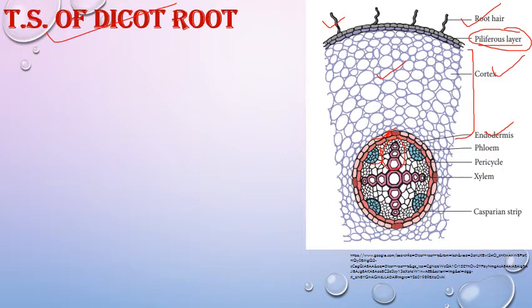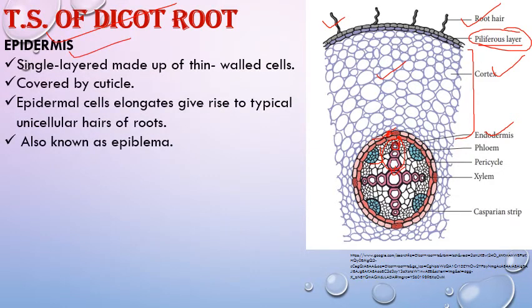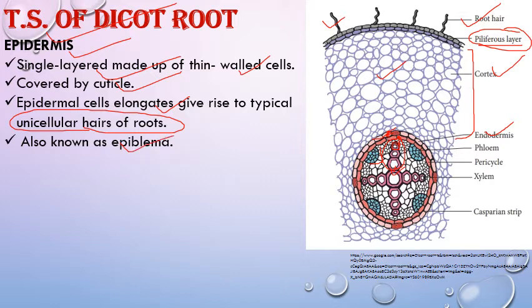Vascular bundles in roots are very unique — they are known as radial vascular bundles. Xylem and phloem are present in separate patches and are not conjoint — not on the same radius. This arrangement is called radial. Another unique feature: in roots, protoxylem faces towards the periphery — towards pericycle — and metaxylem faces towards the center. This is called the exarch condition. The epidermis is a single layer of thin-walled cells; epidermal cells elongate to form unicellular root hairs. In roots, the epidermis is also called epiblema or piliferous layer.